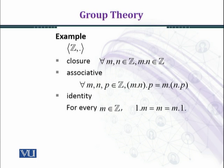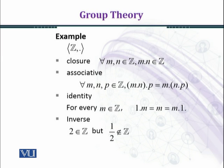One is the multiplicative identity in the set of integers. When we multiply 1 by M, we get M, for every M in the set of integers. However, we cannot find the multiplicative inverse of every integer. For instance, the inverse of 2 is 1 over 2, which does not belong to the set of integers. So the set of integers does not form a group under multiplication.